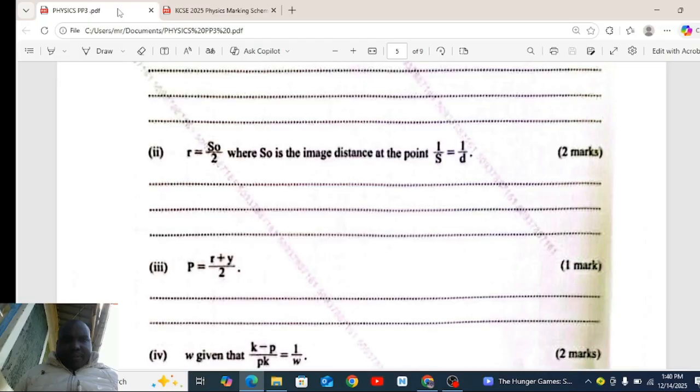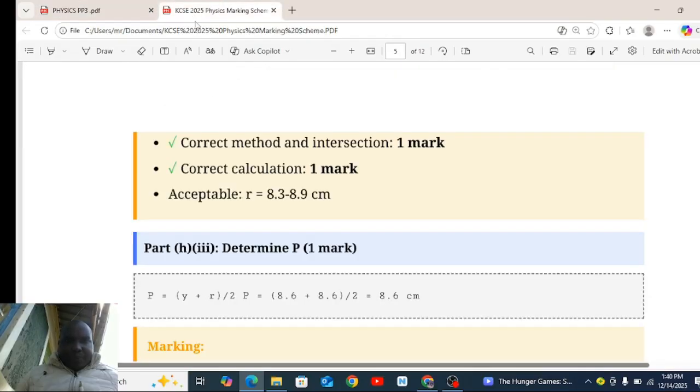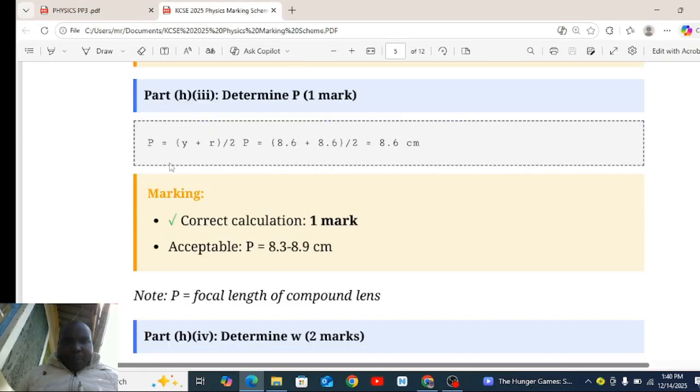Roman 3 finds p, which is r plus y over 2. P equal to r plus y over 2. And that is the answer, 8.6 centimeters.